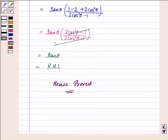Now 2 cos square θ minus 1 gets cancelled with 2 cos square θ minus 1, and we are left with tan θ. And that is the RHS. That is what we had to prove. Hence proved.